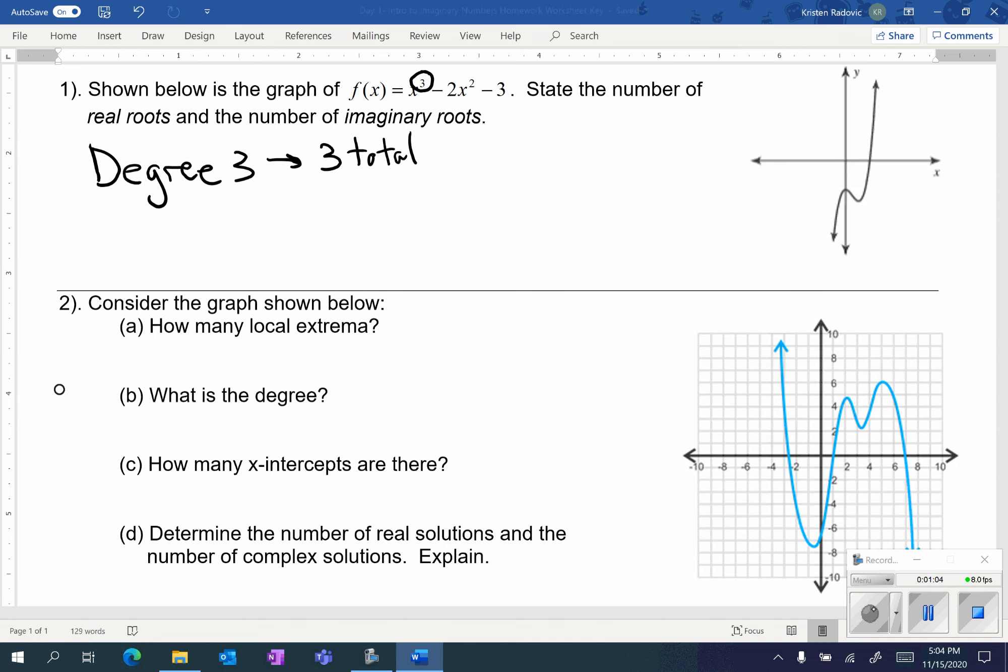Now you're going to look at your graph, and the number of real solutions is the number of x-intercepts that you can see. So on my graph I have one x-intercept, which means that I'm going to have one real solution.